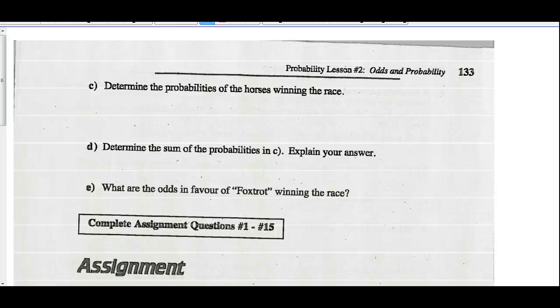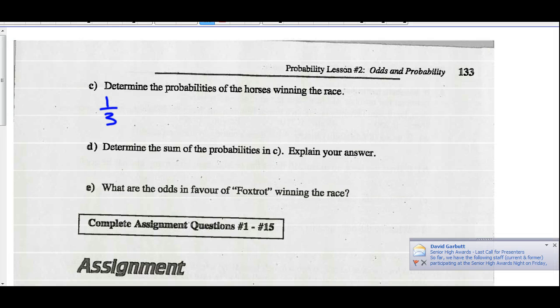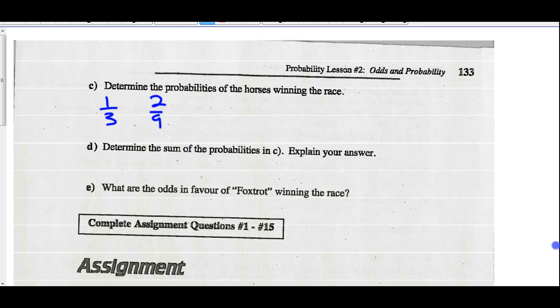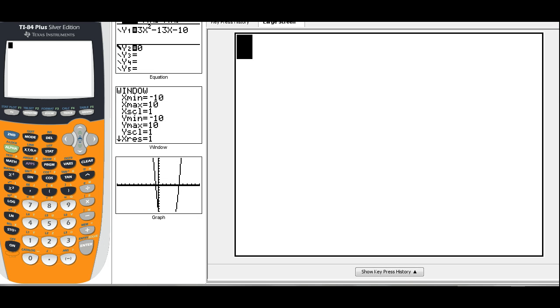Part C. Determine the probabilities of the horses winning the race. So we just did that. We just did that on the previous page. Determine the sum of the probabilities in C. So if we add up all those probabilities from the previous page. We said Free Spirit had a probability of winning 1 third of the time. We said Foxtrot had a probability of winning 2 ninths of the time. Lucky Joe won 12th. Willow was 1 quarter of the time. And Gloria was 1 ninth of the time. So if we add these up, what do we get? You're not really great at adding fractions. Your calculator will do that for you. So let's add these fractions together.